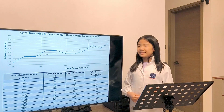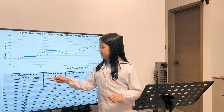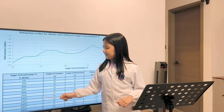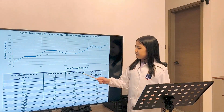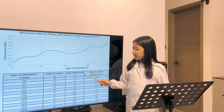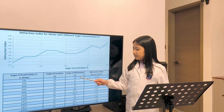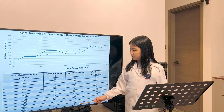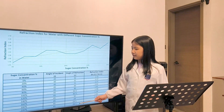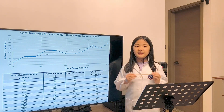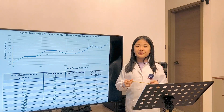Here are the results. By adding sugar into the water, from 0% to 200%, the angle of refraction has changed from 32 to 28.5 degrees. And that is a 3.5 degree difference.